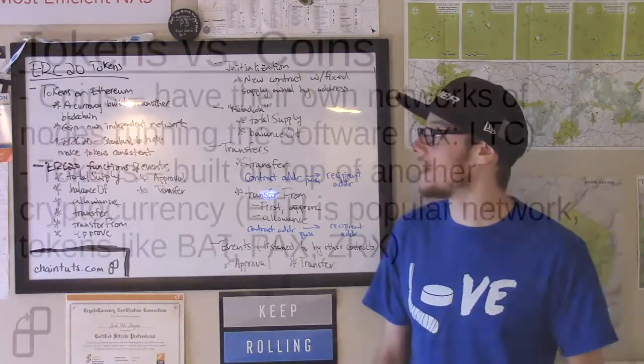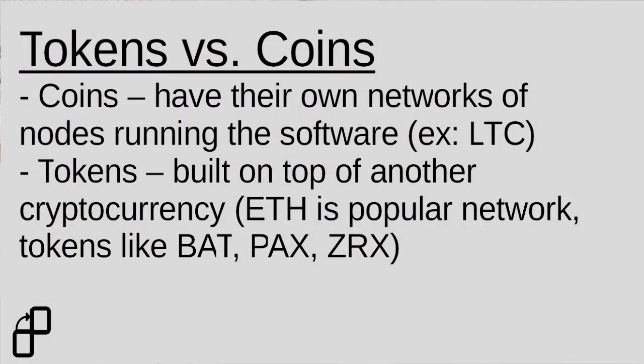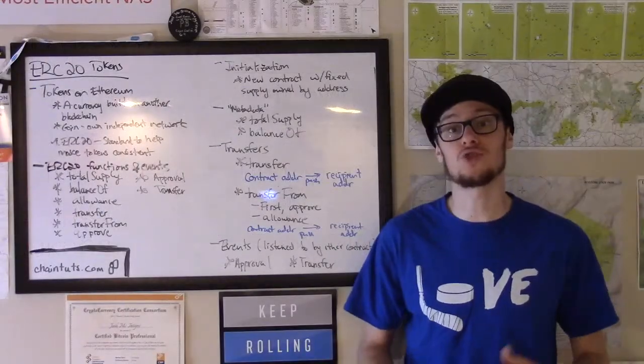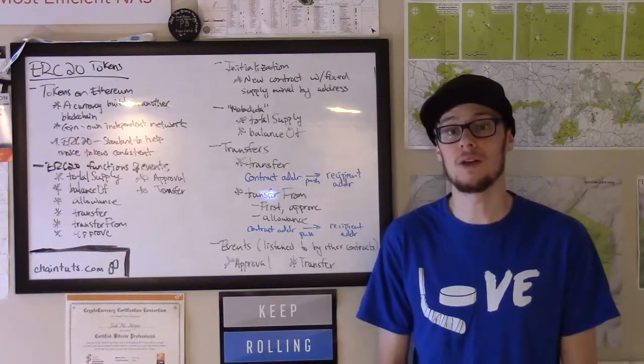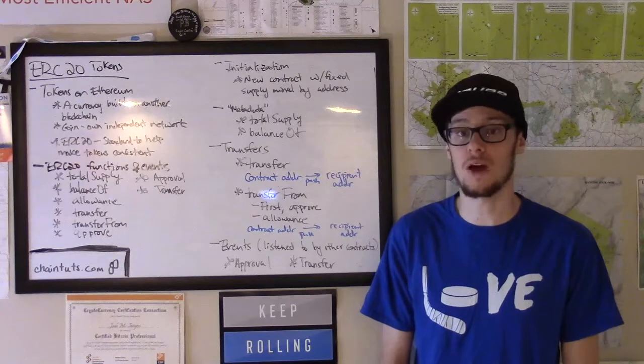However, a token is a currency that is built on top of another currency's blockchain. So for example, one of the most popular blockchains to build new currencies or tokens on top of is the Ethereum blockchain, because Ethereum is really a distributed computing platform that allows these smart contracts to run on it.